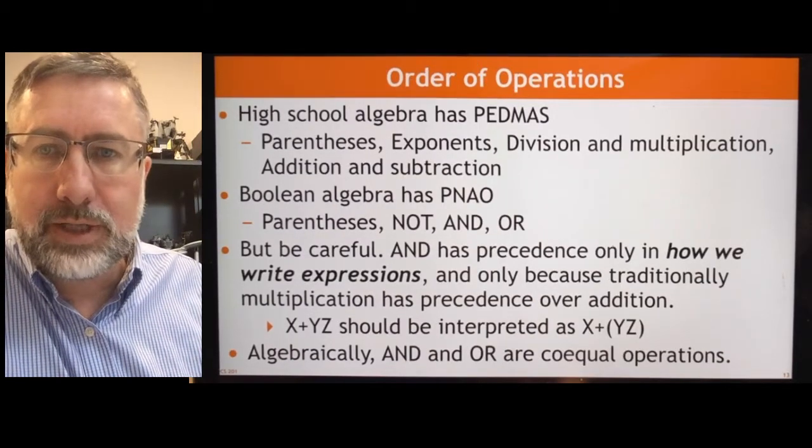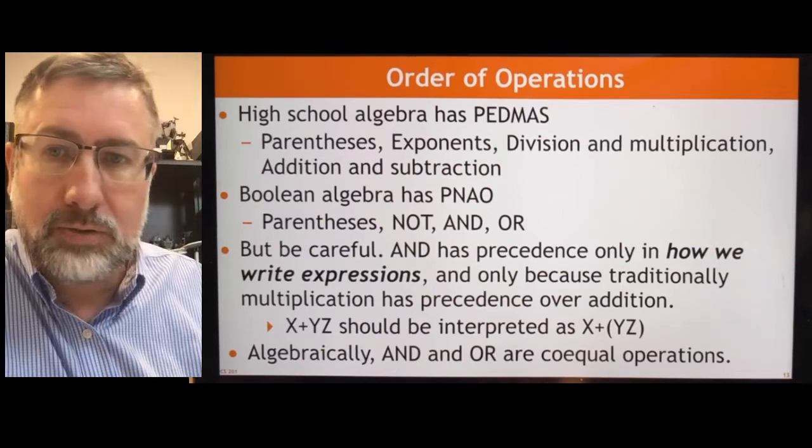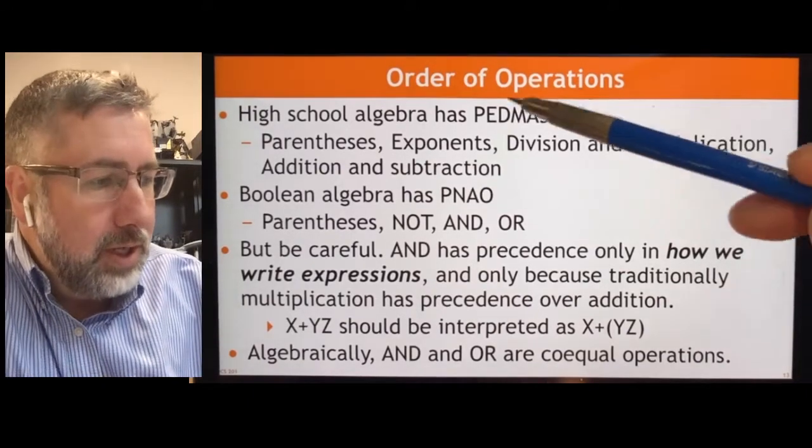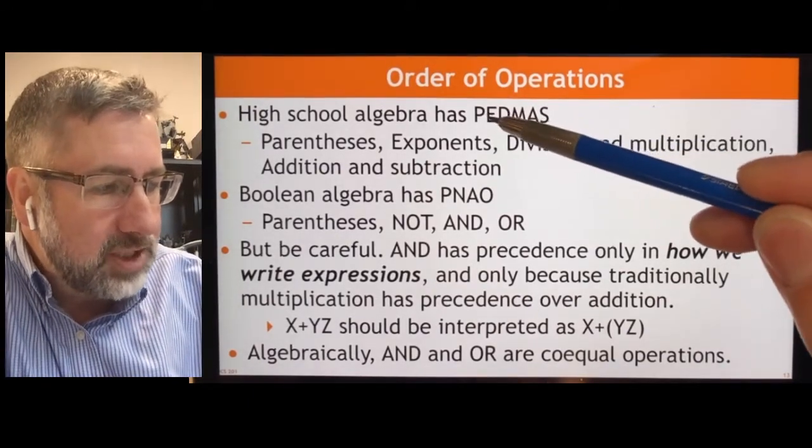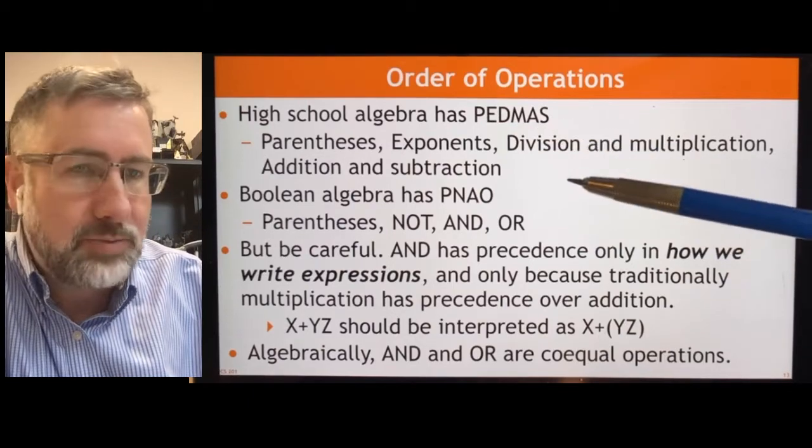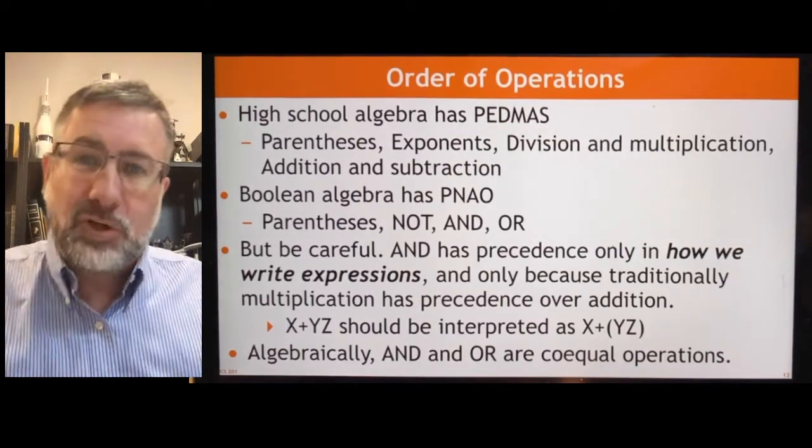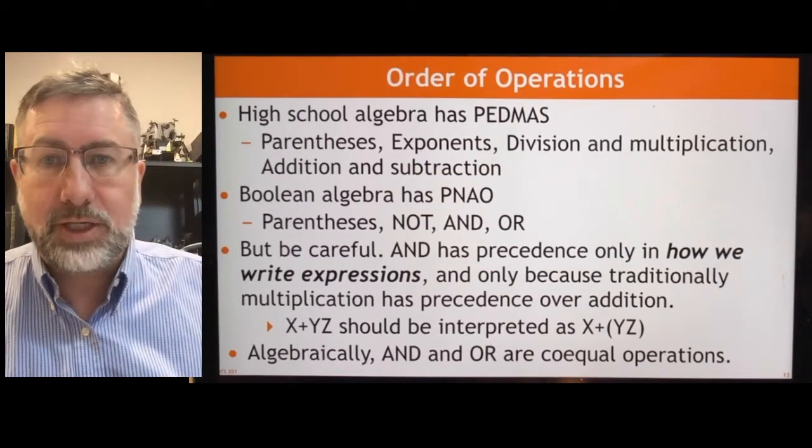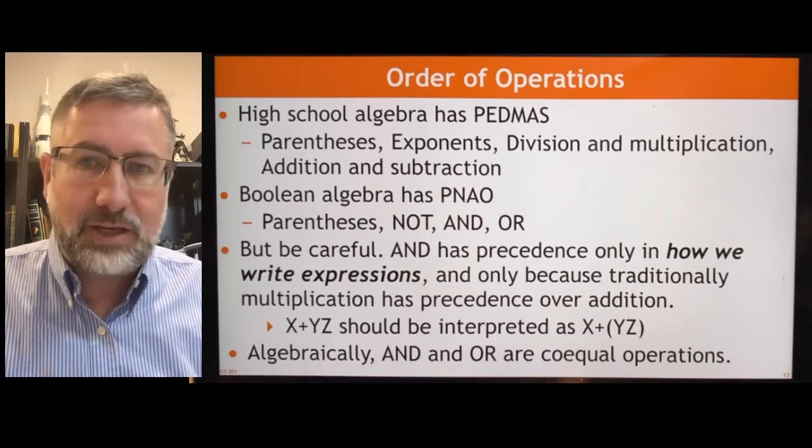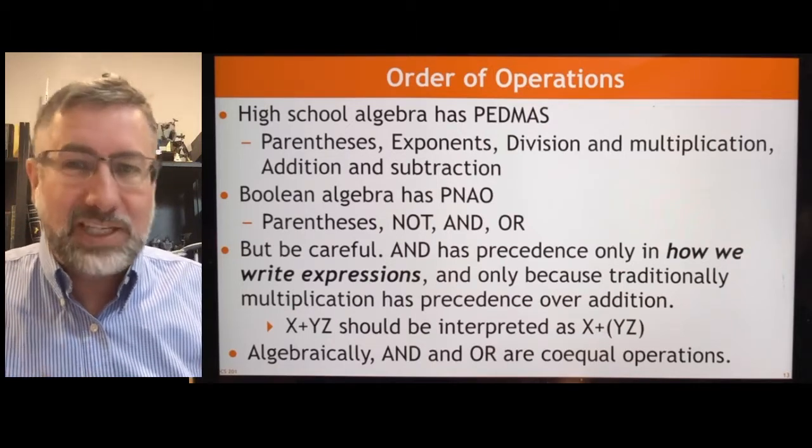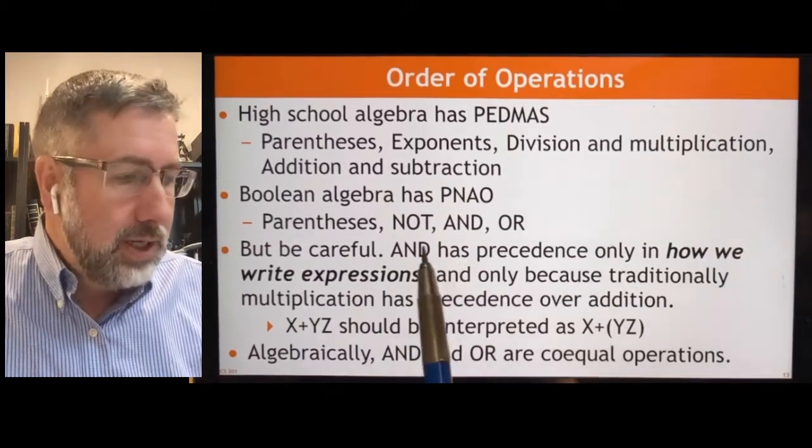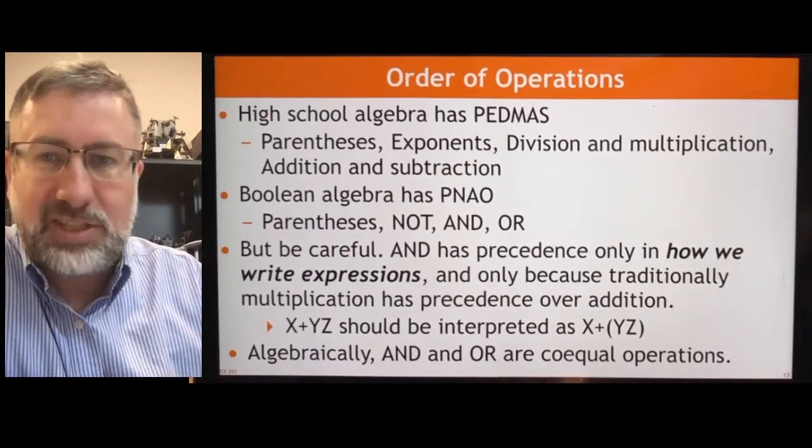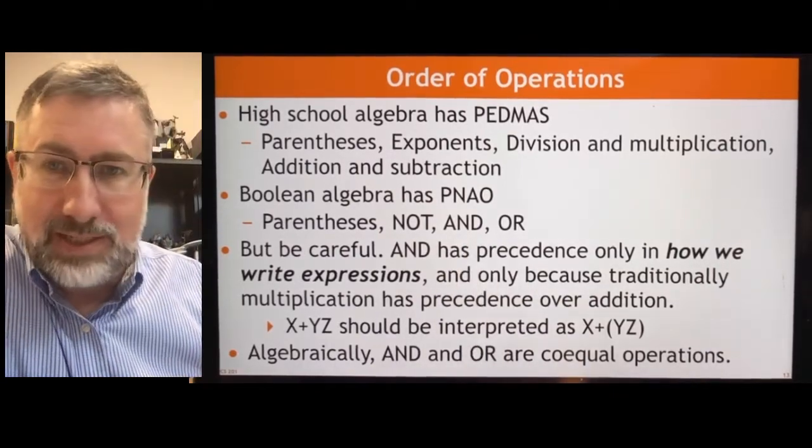Just like with regular algebra, there is an order of operations that we have to follow. With Boolean algebra, the order of operations is a little bit simplistic. So traditional high school algebra has parentheses first and then exponents and then division and multiplication and then addition and subtraction. This is because exponents have priority over division and multiplication, which then has priority over addition and subtraction. In Boolean algebra, we don't have any of those priorities. All we have is NOT and OR, and basically all you've got is parentheses first, always. NOT is first before anything else, because it's a unary operator, it only operates on one thing. But then AND and OR basically have the same precedence.